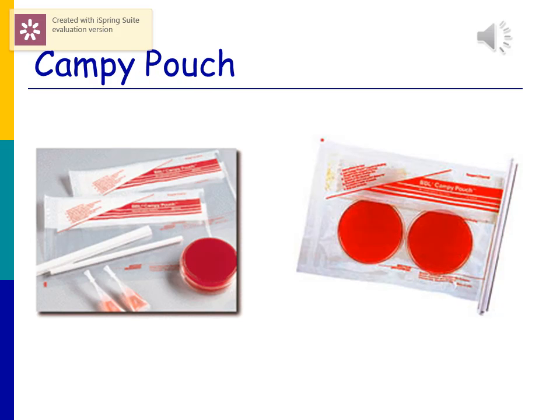Here is your Campy pouch. Two plates fit in one pouch. The pouch has a little opening with a sachet in it. You pull off the squeeze bottle, squeeze the liquid into the opening, it flows down and moistens the sachet. That sachet generates the microaerophilic environment that Campylobacter needs to grow in.